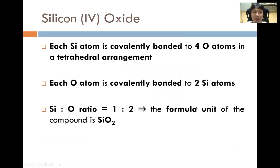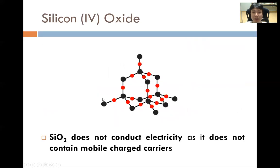The third giant covalent structure is silicon dioxide. Each silicon atom is covalently bonded to four oxygen atoms in a tetrahedral arrangement, and each oxygen atom is covalently bonded to two silicon atoms. The ratio of silicon to oxygen is 1:2, giving the formula unit SiO2. These strong covalent bonds hold the atoms together and must be broken during melting or boiling, so giant molecular structures tend to have high melting and boiling points. Silicon dioxide also does not conduct electricity as there are no mobile charge carriers.